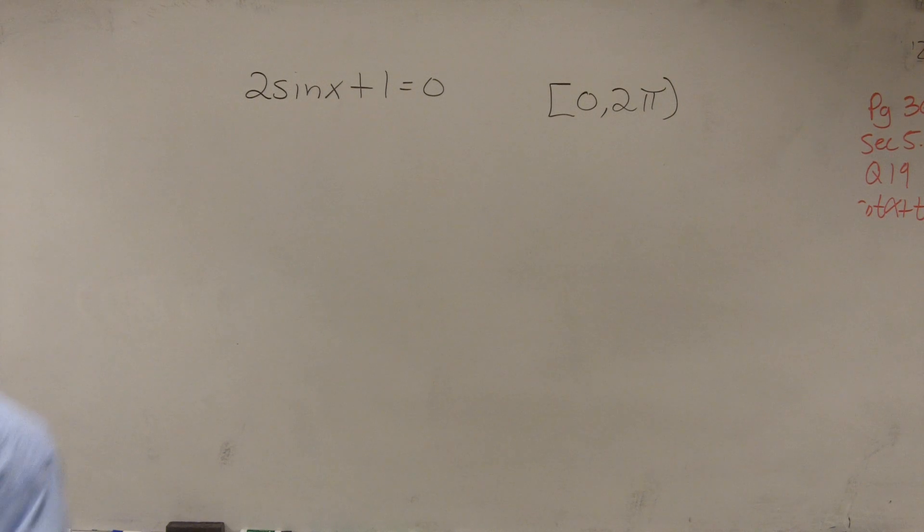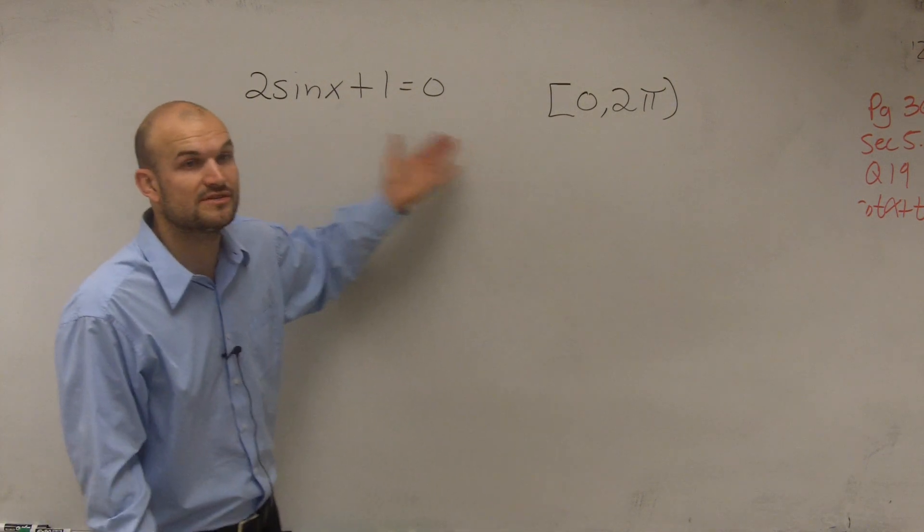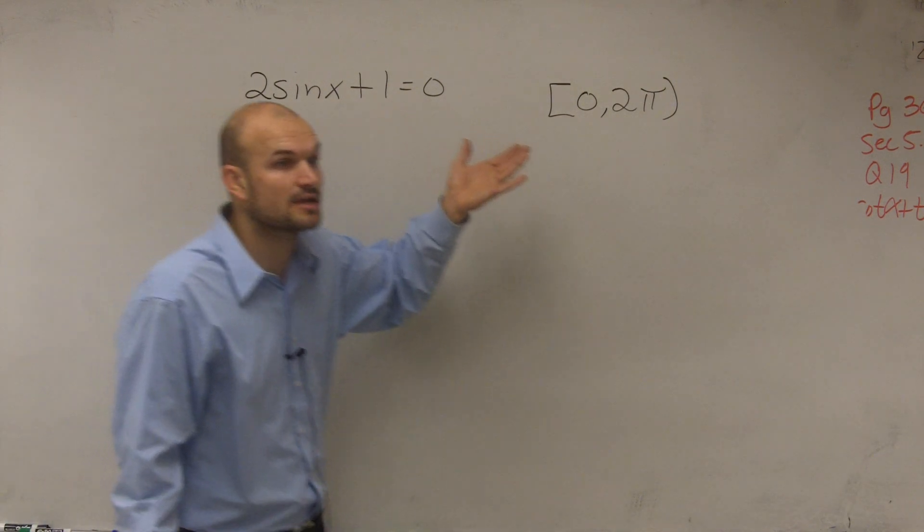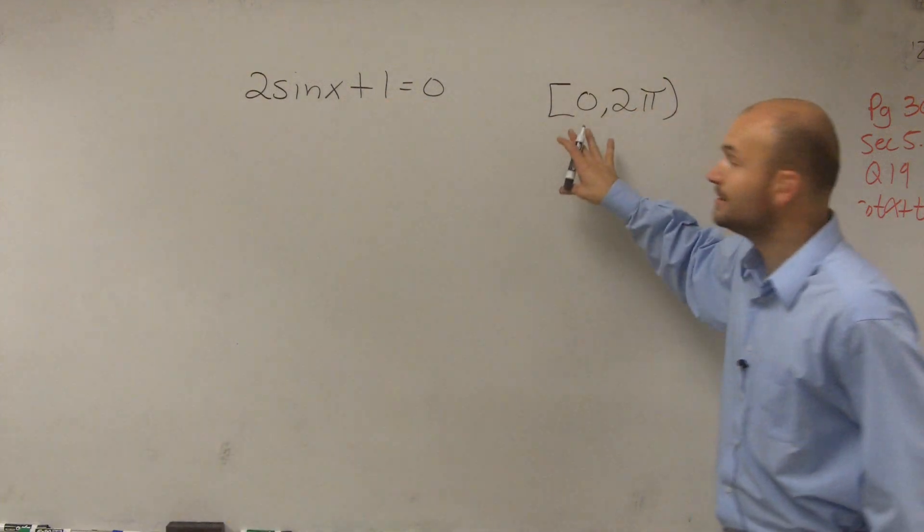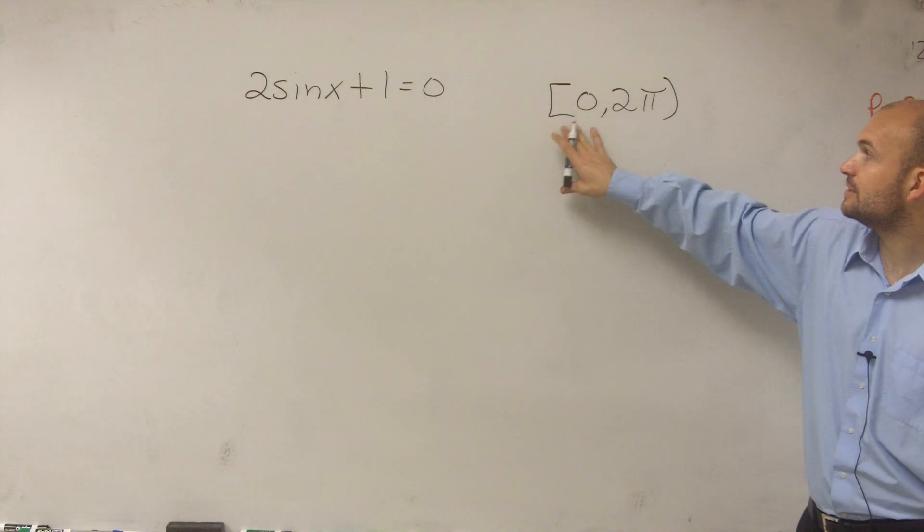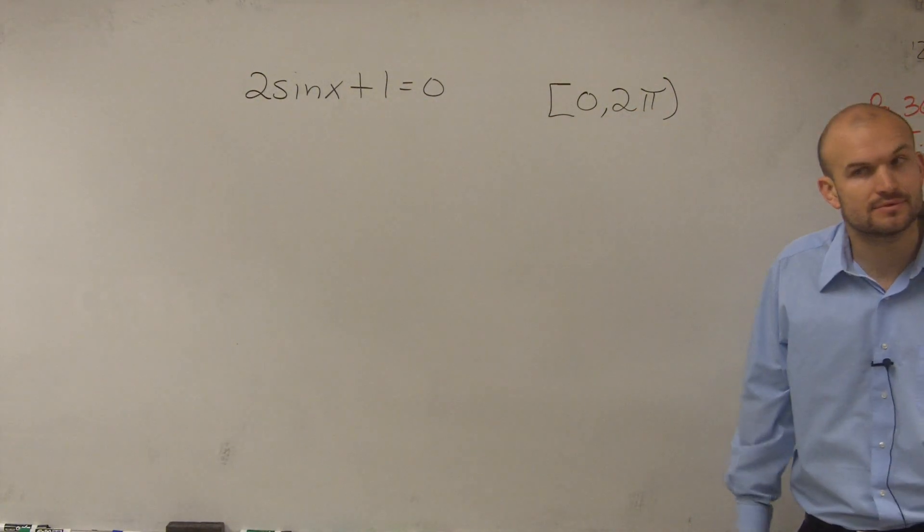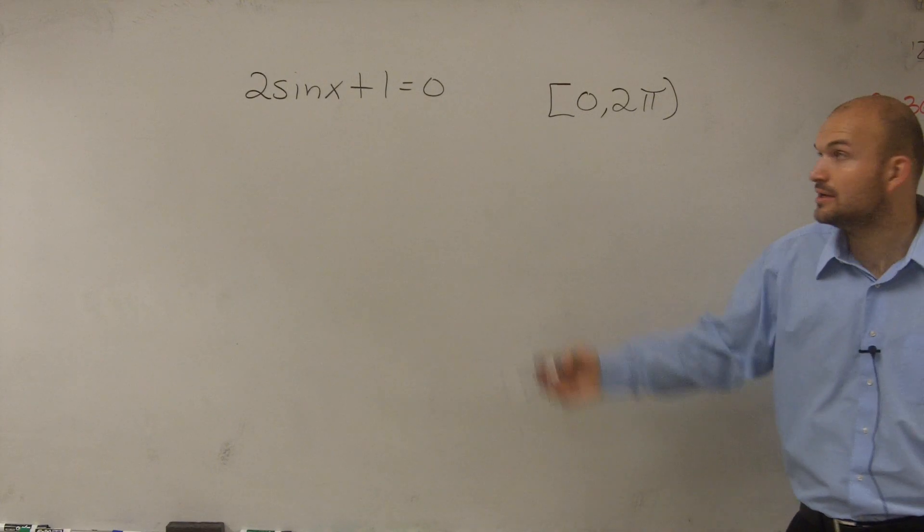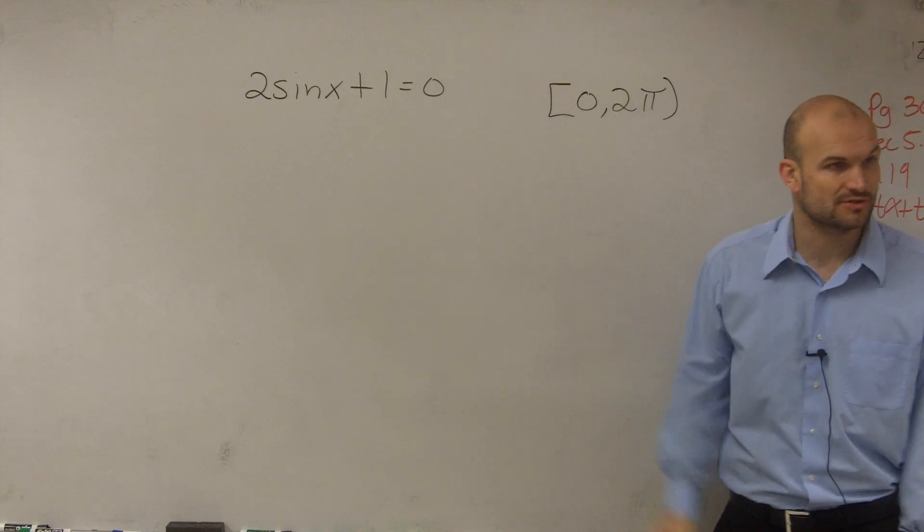All right. So for this example, what we simply need to do is find the values of x that are going to make this equation true on the interval of 0 and 2π. So my answer, my angles of x, have to be between 0 and 2π.